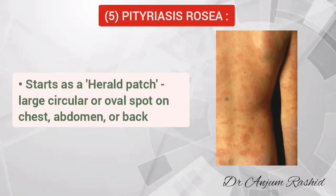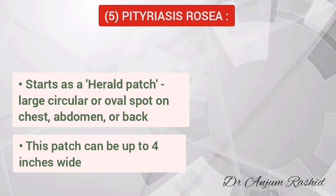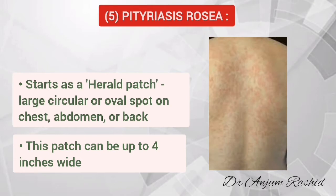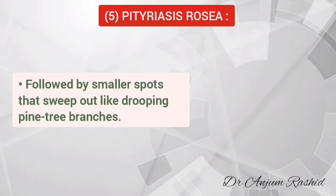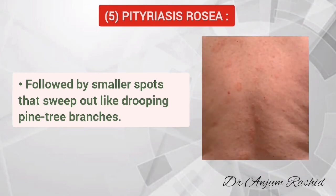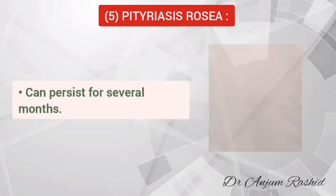The fifth rash is pityriasis rosea. It starts as a herald patch, which is a large circular or oval spot on the chest, abdomen, or back. This patch can be up to four inches wide. The herald spot is followed by smaller spots that sweep out from the middle of the patient's body like drooping pine tree branches. Pityriasis rosea can persist for several months before clearing.